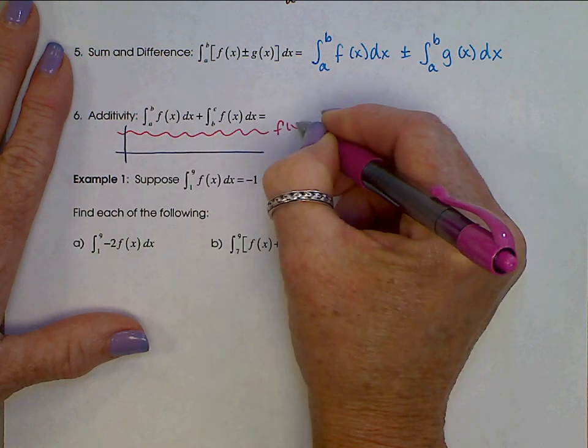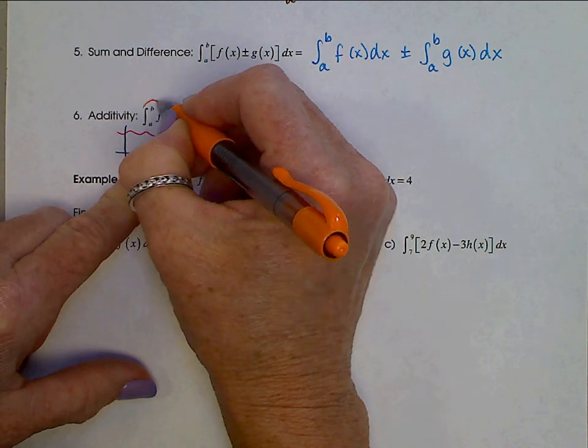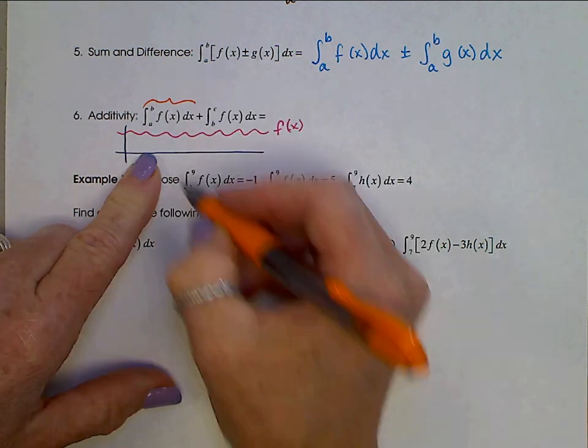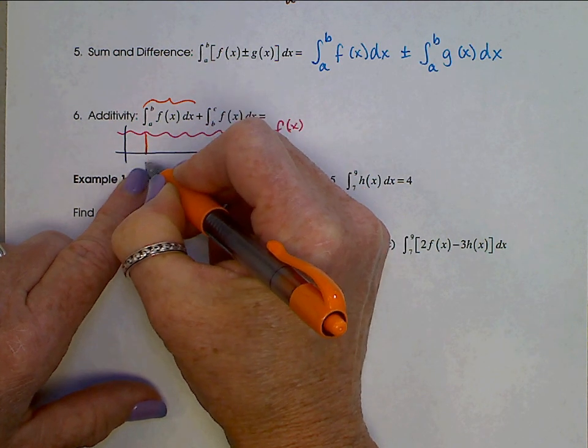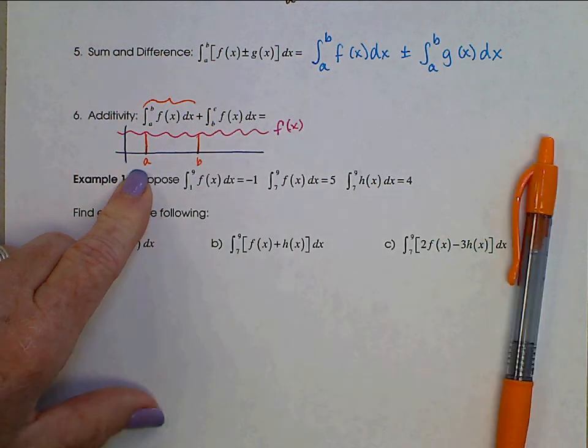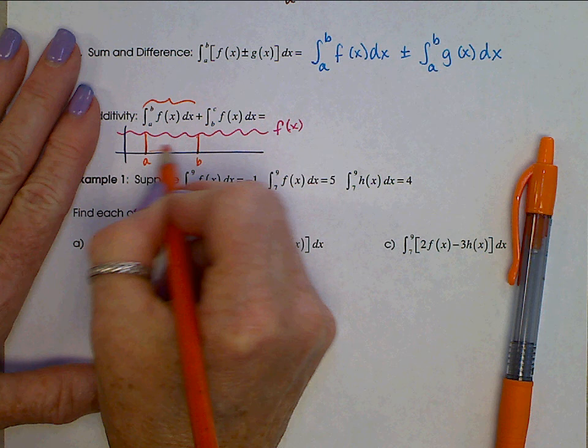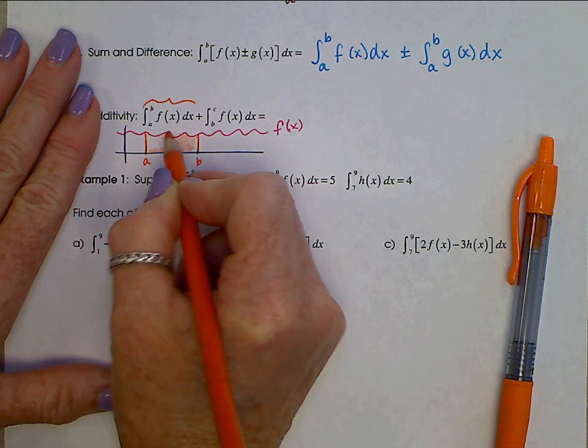We have some function here, some f(x). And this first one, I'm going to put that in orange. That's an area underneath this function from A to B. That's this much.